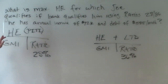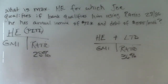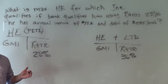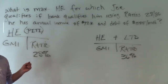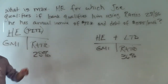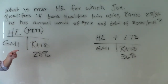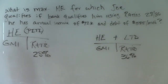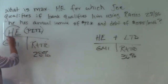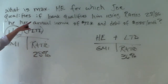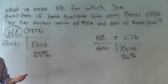Here's the question again. What is the maximum housing expense for which Joe qualifies if the bank qualifies using the ratio of 28/36? He has an annual income of $72,000 and debt of $585 per month. What variable are we looking for based on the question? In this case, what's his maximum expense? That's what we're looking for.